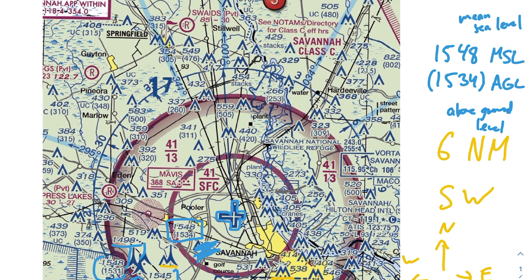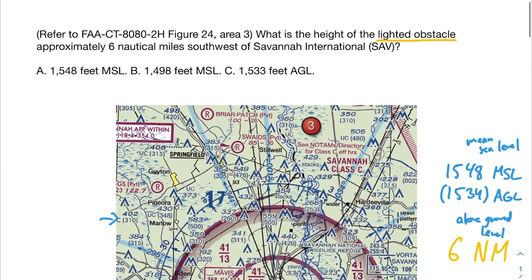Throughout the sectional chart you'll notice these values stacked on top of each other. The MSL is always greater than or equal to the AGL number, which makes sense because measuring from mean sea level will be greater than measuring from ground level — especially if you're on a mountain or elevated terrain. So our two potential answers are 1548 MSL and 1534 AGL. Let's see which answer matches.